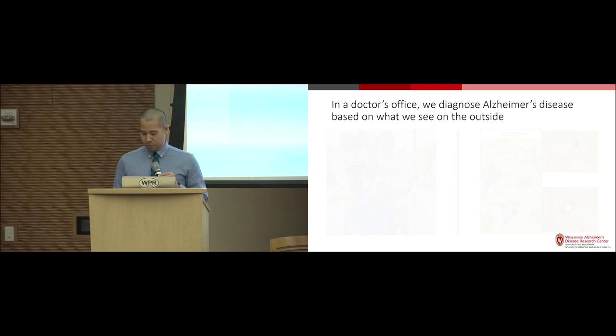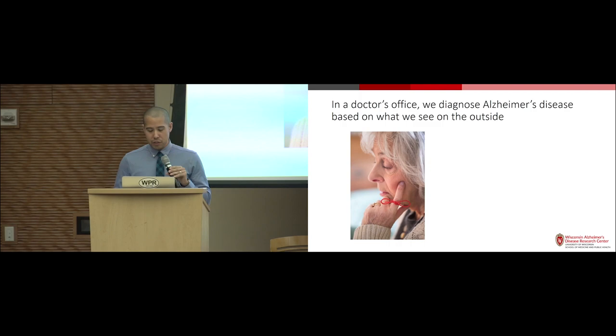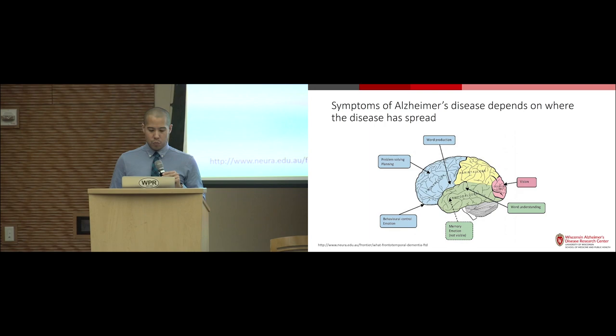We can see these proteins under a microscope when looking at brain tissue, but that requires someone to die, so it's not helpful for clinical trials. In the doctor's office, we diagnose Alzheimer's disease based on what we see with the person. We look at the outside to make this determination, using the history and brain testing to determine if someone has normal cognition, mild cognitive impairment, or dementia. We use the details to help determine if Alzheimer's disease is the primary cause.